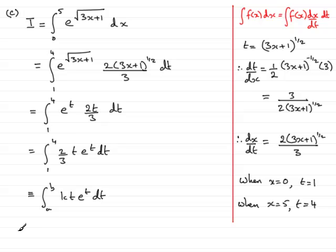So we can say then that clearly a, the lower limit, is 1, b is clearly the upper limit, 4, and k is the value 2 thirds, the constant 2 thirds. So, that brings us then to the end of part c.